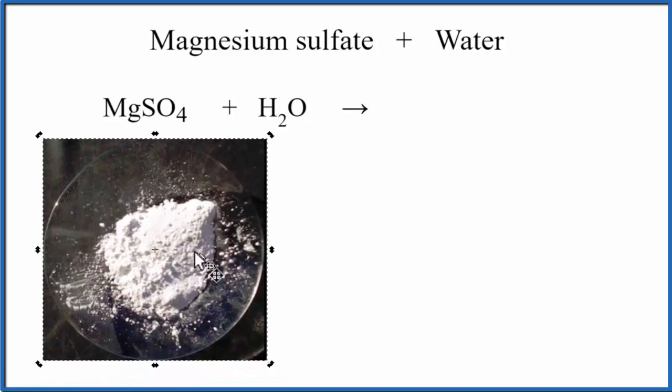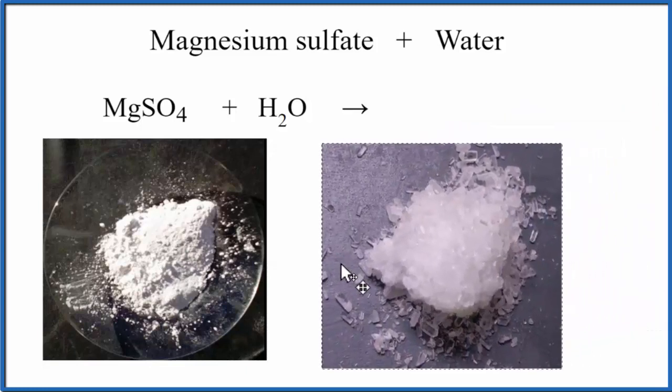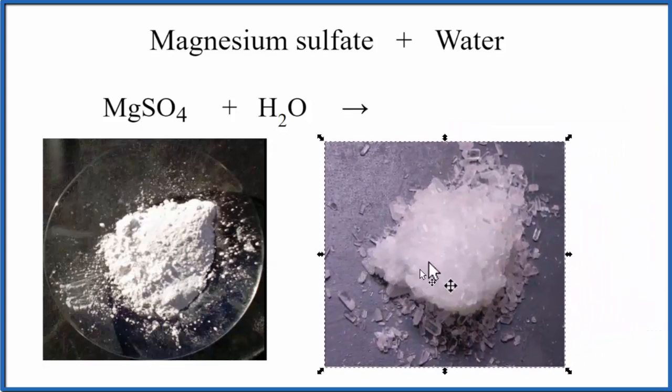This is MgSO4, it's called anhydrous because normally MgSO4 will have water molecules around it. In fact, it's called a hexahydrate. It means it'll have six water molecules around each Mg ion.